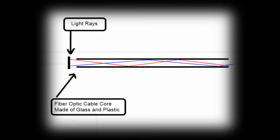This means when the light hits the side, it bounces back in and forward down the cable.